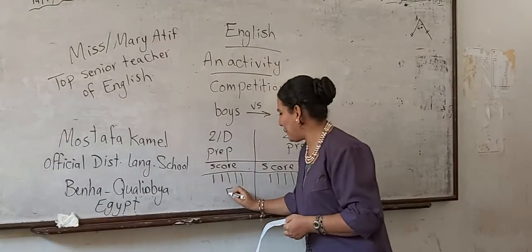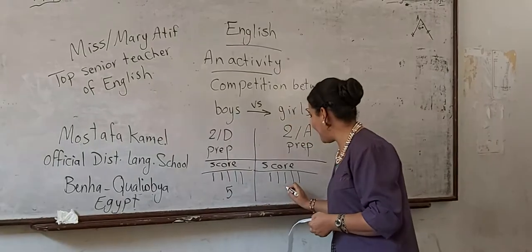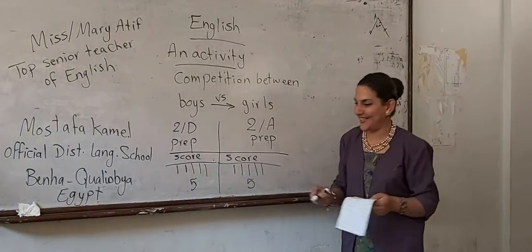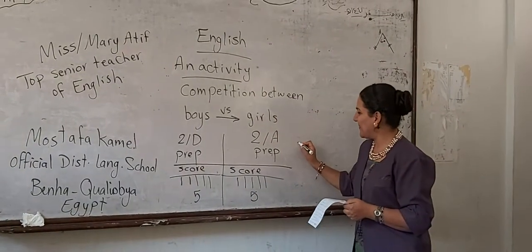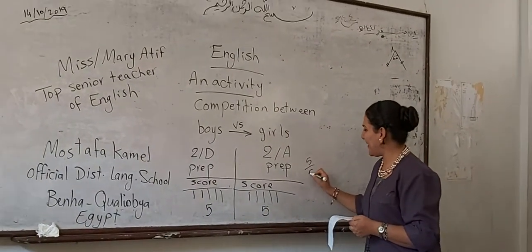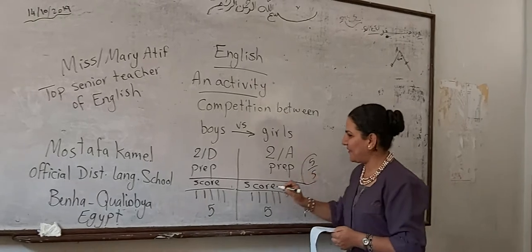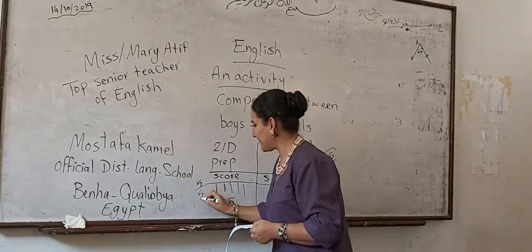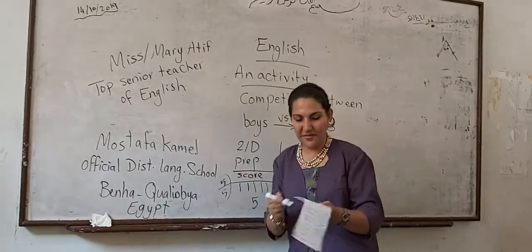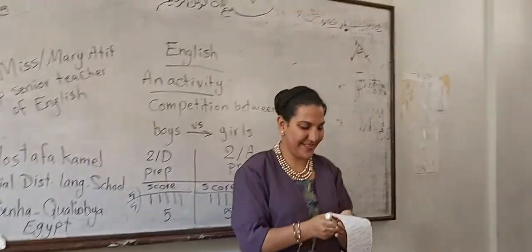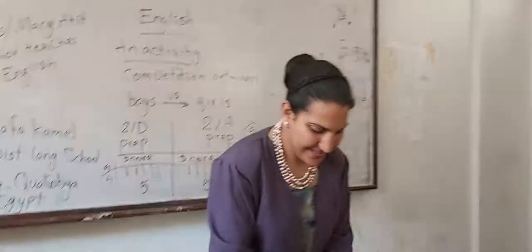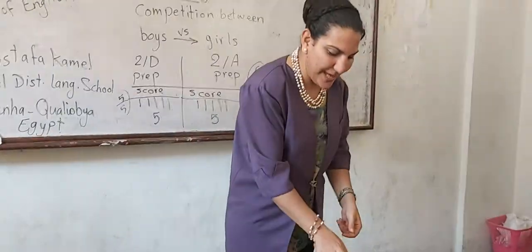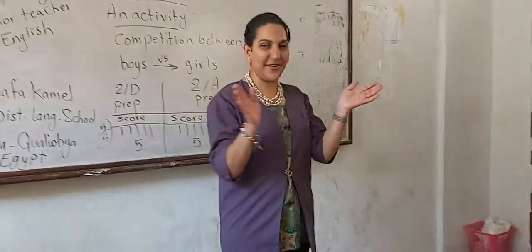You have 5 points and you have 5 points — you are equal. Excellent! Very good. 5 over 5 and 5 over 5. Very good. Please clap your hands for each other.